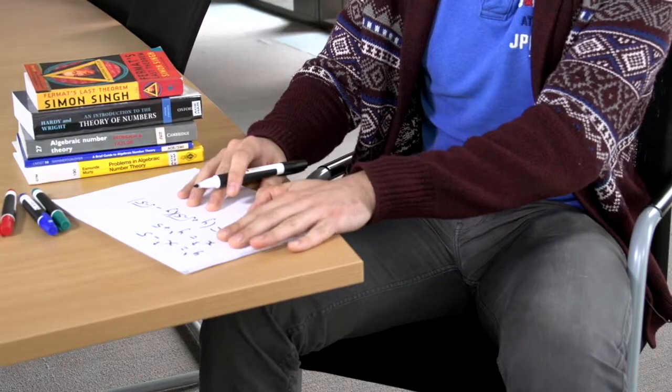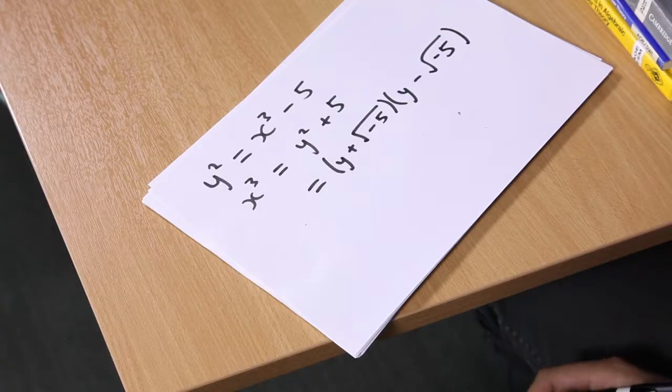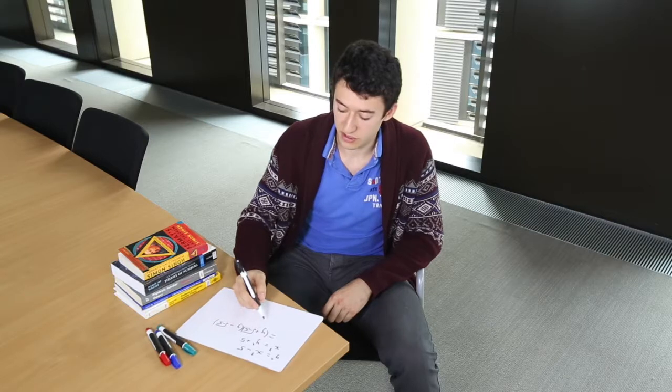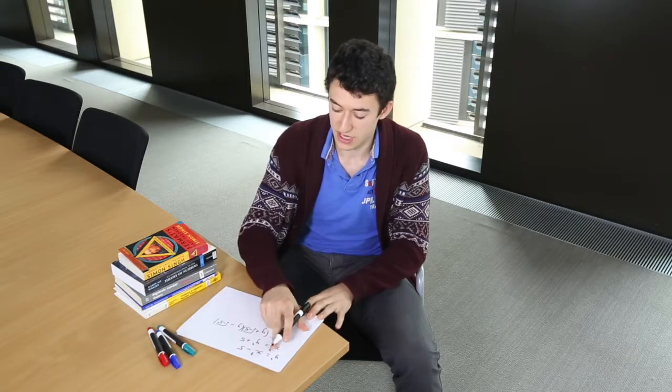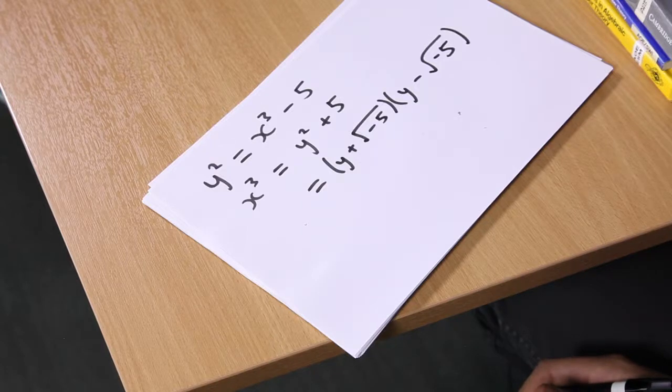Now we've got multiplication on this side and multiplication on this side. This makes the problem more feasible to solve and in fact we can show that this equation has no solutions. You feel like if you were to look hard enough then you would find numbers which solved it but it's not true, there aren't any.